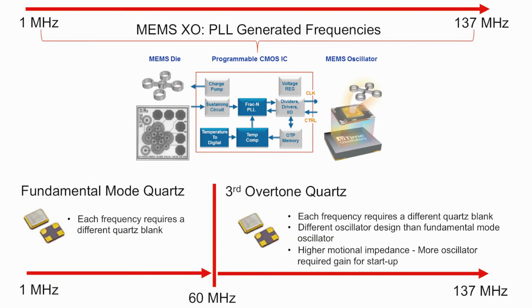Reason number eight: qualification efforts can be reduced with MEMS oscillators. This is important since component qualification can consume significant time and resources. SciTime products are based on a programmable platform which allows each device within a product family to generate a wide range of frequencies, supply voltages, and stabilities. For example, if resources have been invested in qualifying a SciTime device at a particular output frequency and a new board design requires a different frequency, the existing qualification data may be extended to this new frequency within the base part family. In contrast, each crystal frequency requires a different quartz blank, and if a design requires frequencies above 60 MHz, a different technology than fundamental mode quartz is often used, such as third-overtone quartz. Use of third-overtone quartz can introduce additional challenges to ensure reliable startup and will certainly require qualification.